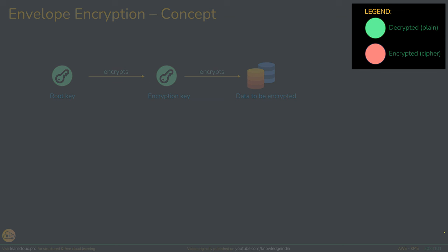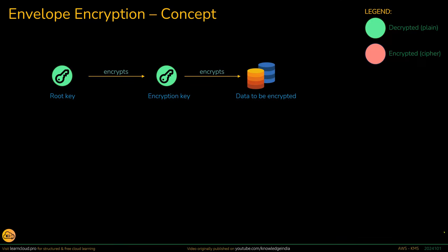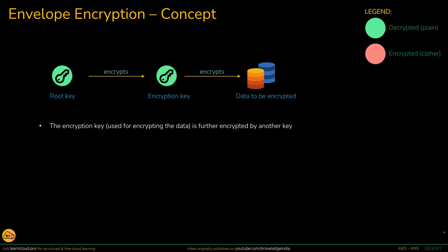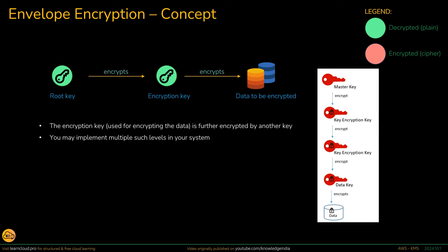On the right-hand side, wherever you see green it represents the plain format of the key, and the red or pink thing is the encrypted format. The encryption key used to encrypt the data is further encrypted by another key. You can go ahead and implement multiple such levels if you want — you can have more and more chaining done. The actual key getting used to encrypt the data is encrypted by another key, which is then encrypted by yet another key, and so on. You can have multiple such levels in your system when implementing it. But then what about the security of the root key on the left-hand side? How do we ensure its security? Let's see the implementation of this concept in AWS.